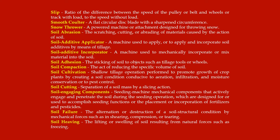Soil compaction: the act of reducing the specific volume of soil. Soil cultivation: shallow tillage operation performed to promote growth of crop plants by creating a soil condition conducive to aeration, infiltration, and moisture conservation, or to pest control. Soil cutting: separation of a soil mass by a slicing action.